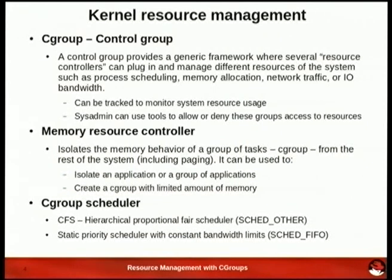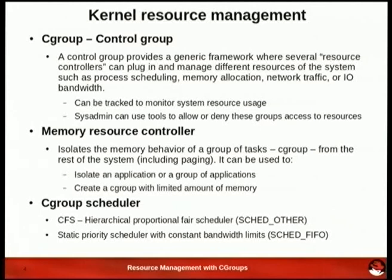The control group is just the framework for allocating and managing those resources. Within that, we have a series of controllers. First is the memory controller, which lets you say that this resource is only allowed a certain amount of memory from the operating system. Then we've got a scheduler to attribute a portion of the CPU resources, which has a weighting system. So you say this one's got 500 shares, this has got 1,000 shares, and it will weight the load accordingly.